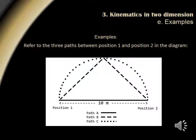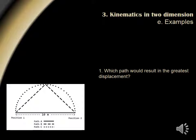Let's do some examples referring to the three paths between position 1 and position 2 in the diagram. Path A will represent the solid line, path B will represent the dashed line, and path C will represent the dotted line. The first question asks which path would result in the greatest displacement? The answer, of course, is all paths will result in the same displacement. This is because displacement only is concerned with the final versus the initial positions.